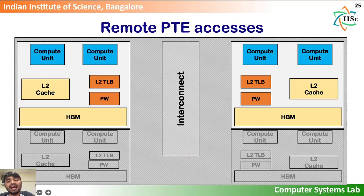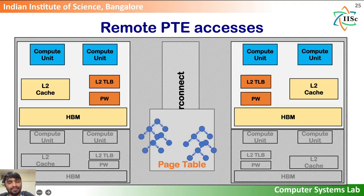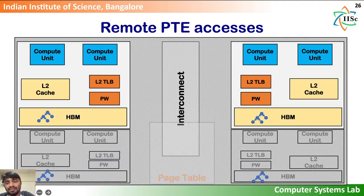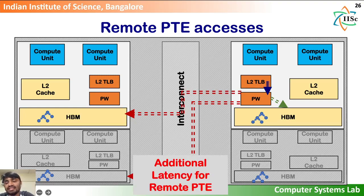Both private and shared TLB designs suffer from remote PTE or page table accesses. The page tables may be distributed across the chiplets of an MCM GPU. Upon an L2TLB miss, the page table walkers on the same chiplet walk the page table. Depending on where the PTE is resident, the page table walkers on a chiplet may have to access remote memory on other chiplets. This incurs additional latency, increasing the L2TLB miss latency and overall slowing down execution.